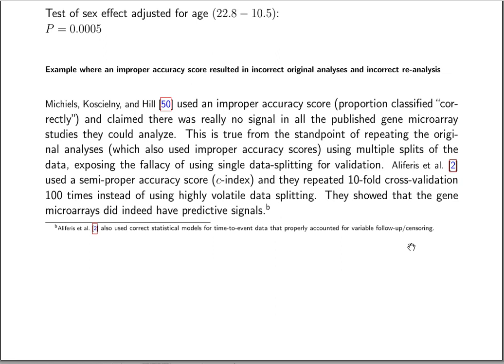Michaels et al. found a number of defects in how the research was being done. One defect was that research commonly used single split-sample validation on small samples, which is notoriously unstable. They redid the analyses using multiple splits of the data, and using this more precise and stable approach, concluded that not only was there not good predictive ability in these gene microarray datasets — there was no signal whatsoever.